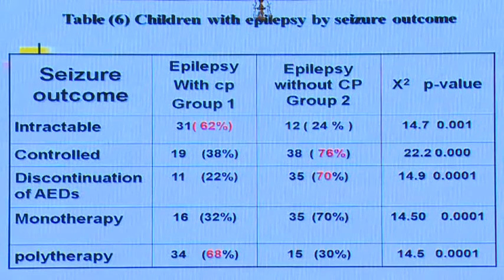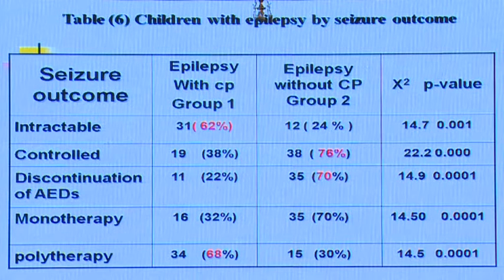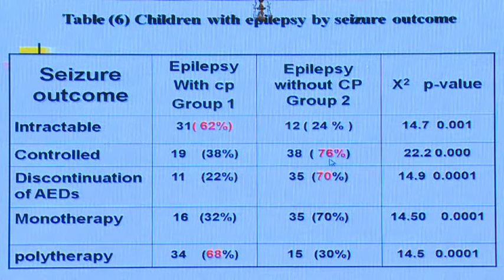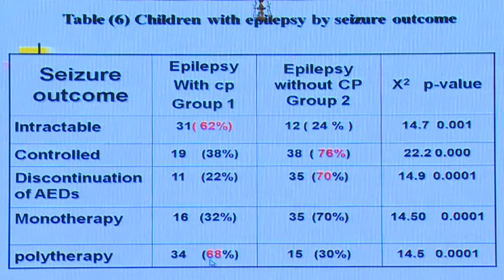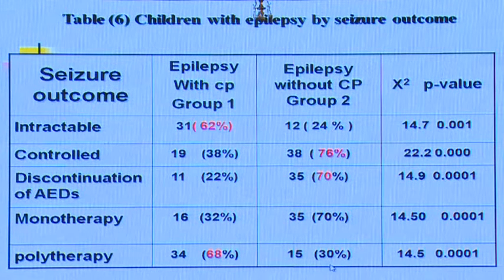Intractable epilepsy — meaning epilepsy not responding to medical treatment or other types of therapy — was seen in 62% of children with CP and epilepsy, compared to only 24% without CP. Epilepsy was controlled in 76% of children without CP but only in 38% with CP. More patients with CP had to be put on polytherapy, using several medications altogether. This data demonstrates how difficult epilepsy can be in children with cerebral palsy.